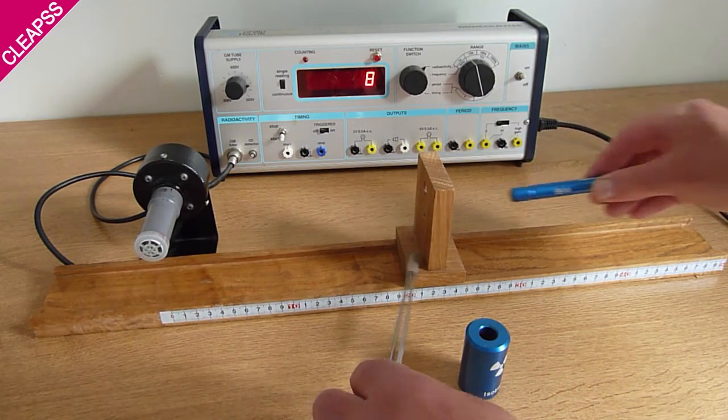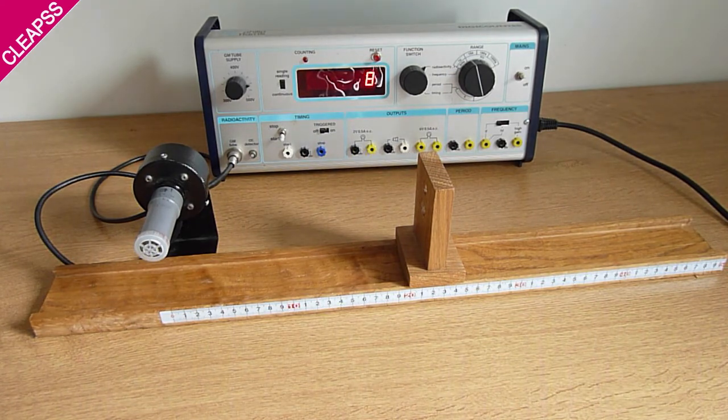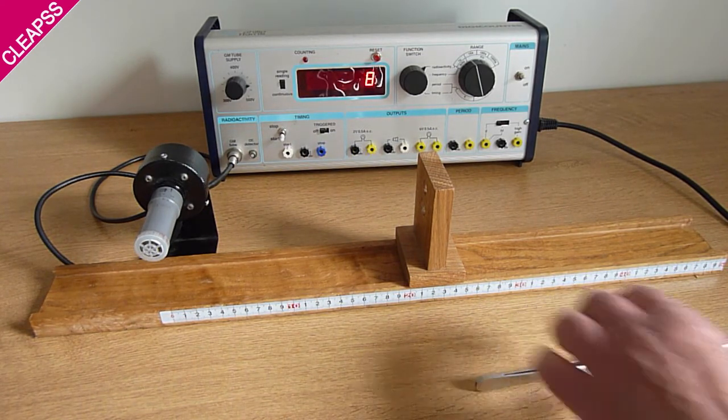Make sure you put your hand between the GM tube and the source, and keep back at least 300 millimeters from the apparatus.